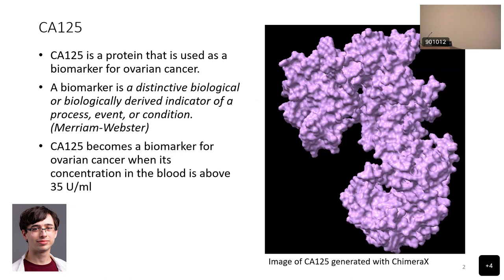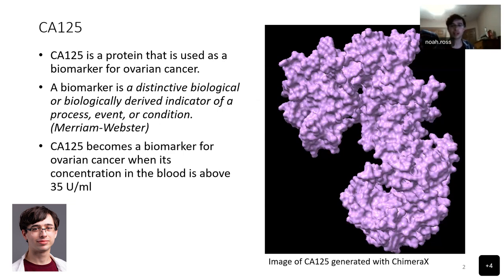CA-125 is a protein that is used as a biomarker for ovarian cancer. A biomarker is a distinctive biological or biologically derived indicator of a process, event, or condition. When someone has ovarian cancer, their blood will likely have more than 35 units per milliliter of CA-125. On the right, you can see an image of the protein generated with CMRX.